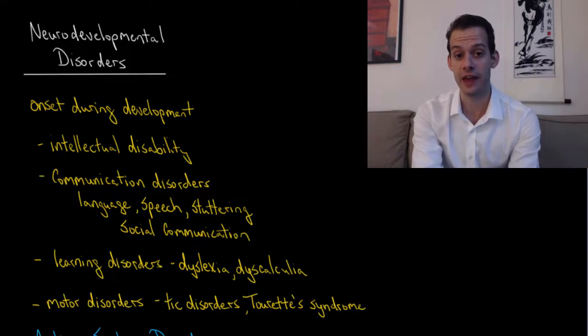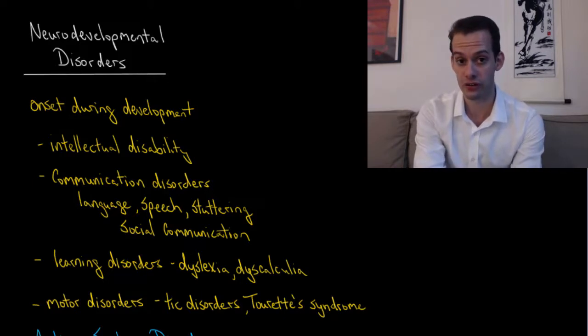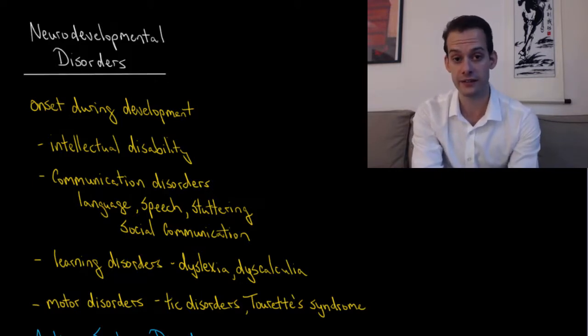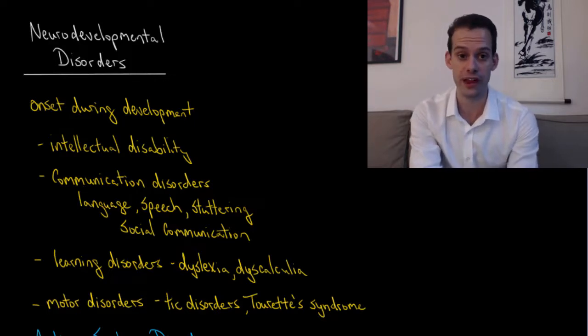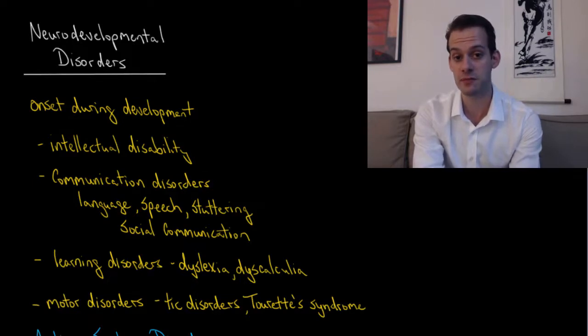This is a category that refers to disorders that have their onset during development. This includes things like intellectual disability, communication disorders involving problems related to language, speech, stuttering, or social communication, learning disorders like dyslexia and dyscalculia, and motor disorders like tick disorders and Tourette's syndrome. In this video we're going to focus on just two disorders: autism spectrum disorder and attention deficit hyperactive disorder.